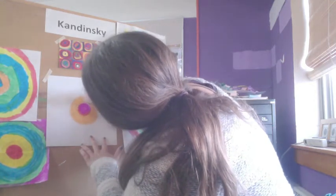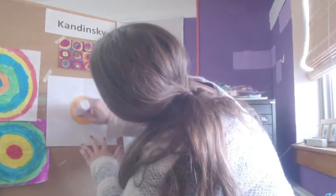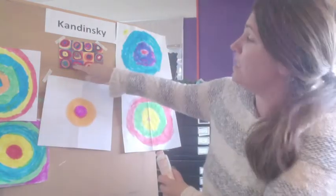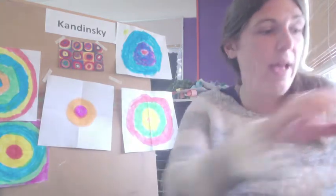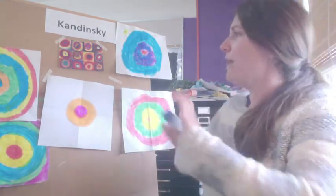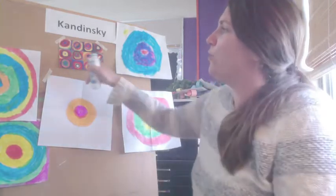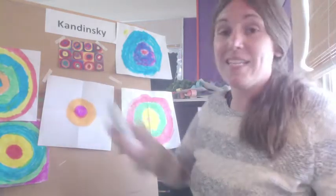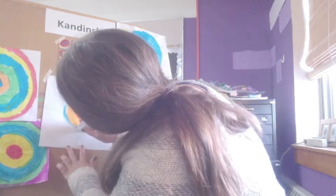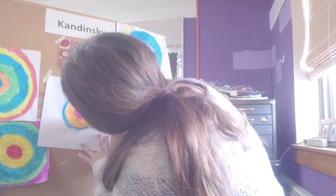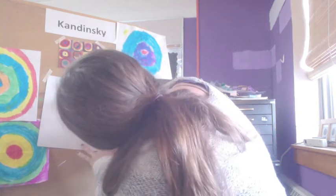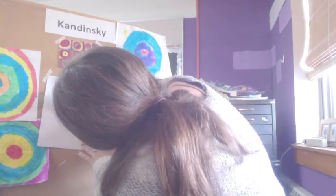Kandinsky's circles had three rings outside the middle. You can make three rings outside the middle or you can make more than that — it's up to you. Next I'm going to use some blue. You'll notice he had some thinner rings and then some thicker ones, so with the blue I'm going to make a thinner ring.